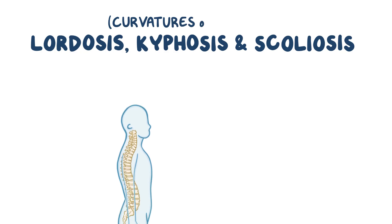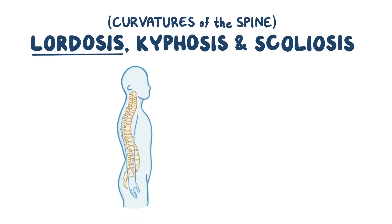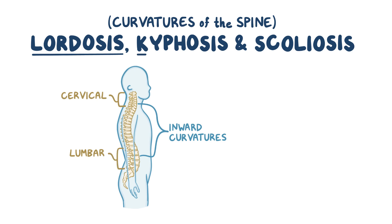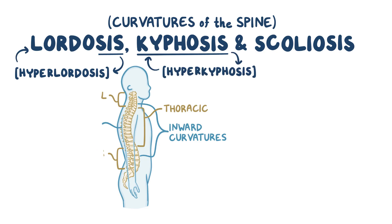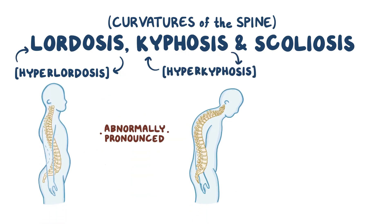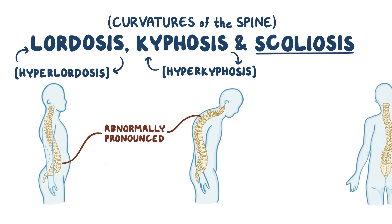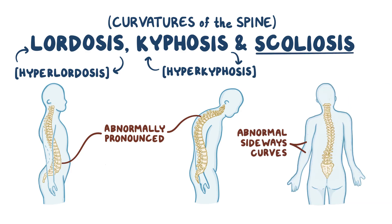Lordosis, kyphosis, and scoliosis refer to curvatures of the spine. Lordosis refers to the normal inward curvatures of the spine at the cervical and lumbar regions, while kyphosis refers to the normal outward curvature of the spine specifically at the thoracic region. These terms get used interchangeably with hyperlordosis and hyperkyphosis, which means that the curves look abnormally pronounced. Finally, there's scoliosis, which always refers to the abnormal sideways curvatures of the spine.